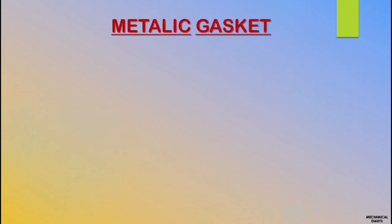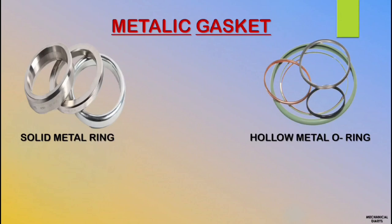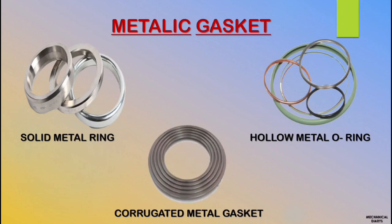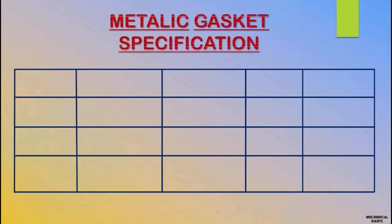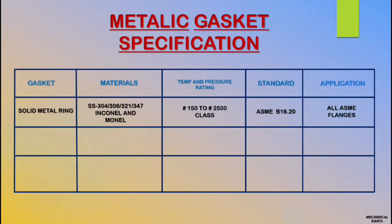Now we'll see metallic gaskets. Metallic gasket has three types. First is solid metal — this type is also called a ring joint gasket. Then hollow metal O-ring, mostly used in rotating equipment. And corrugated metal gasket. For solid metal ring gasket, materials include SS304, SS316, SS321, SS347, Inconel, and Monel. It is available from 150 class to 2500 class, standard is ASME B16.20, and it is applied to all types of ASME flanges.